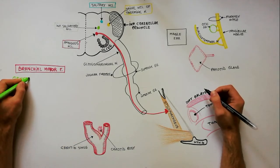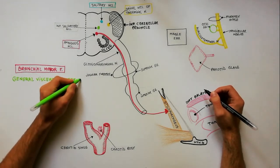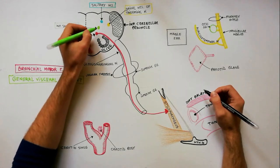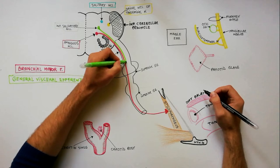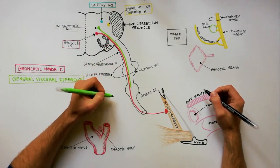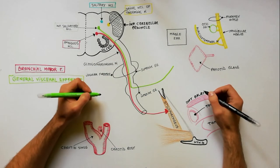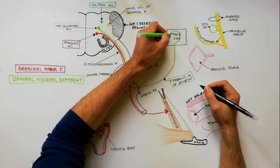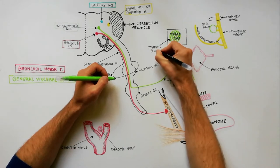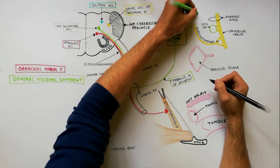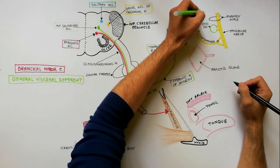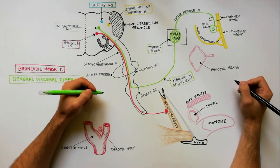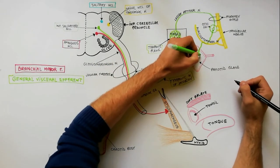With the green color we will indicate the general visceral efferent fibers. Preganglionic neurons of the parasympathetic motor fibers are located in the inferior salivatory nucleus. Axons from the inferior salivatory nucleus join the other components of the glossopharyngeal nerve and exit through the jugular foramen. These preganglionic parasympathetic fibers leave the glossopharyngeal nerve at the level of its inferior ganglion as the tympanic nerve of Jacobson. The tympanic nerve reaches the tympanic cavity, where it forms the tympanic plexus on the medial wall of the middle ear. From the plexus emerges the lesser petrosal nerve, which leaves the cranial cavity through the foramen ovale to synapse in the otic ganglion. From the otic ganglion, the postganglionic parasympathetic fibers travel via the auriculotemporal nerve to supply secretomotor fibers to the parotid gland.